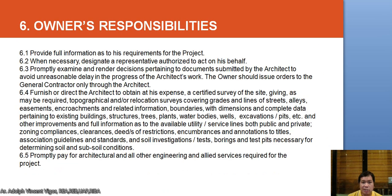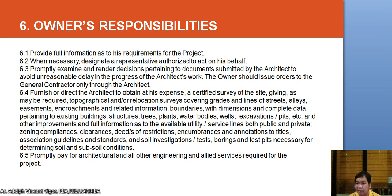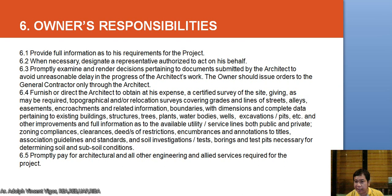The owner also has responsibilities. One is to provide information as to his requirements for the project, designate a representative authorized to act on his behalf, and promptly examine and render decisions on documents submitted by the architect to avoid unreasonable delay. The owner should issue orders to the general contractor only through the architect. In a construction project, it is necessary to establish a clear chain of command on site: the owner issues orders through the architect, who then issues them to the general contractor, who cascades them to staff on site.